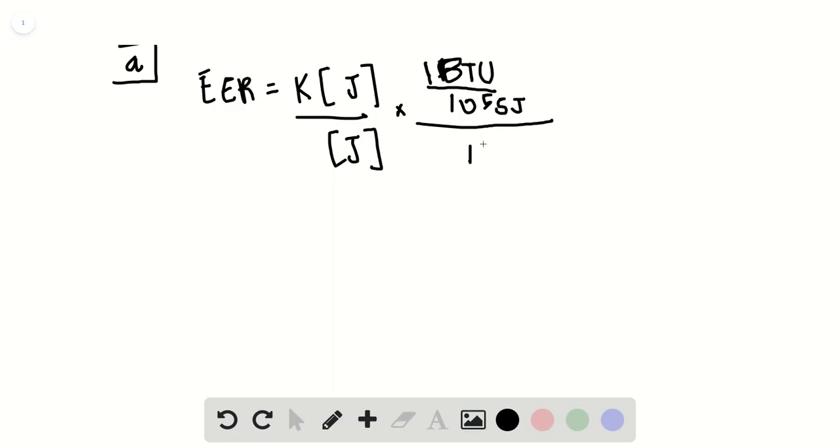So yeah, so then one watt hour is actually 3,600 joules, because that's how many joules you burn if you're burning at one watt, one joule per second for 3,600 seconds. Okay, so if you compute this, hopefully I get what I got, and I actually got the wrong thing at first, again, because I kind of stumbled in that logic. And so that's 3.41 times K. So that's how you convert it.